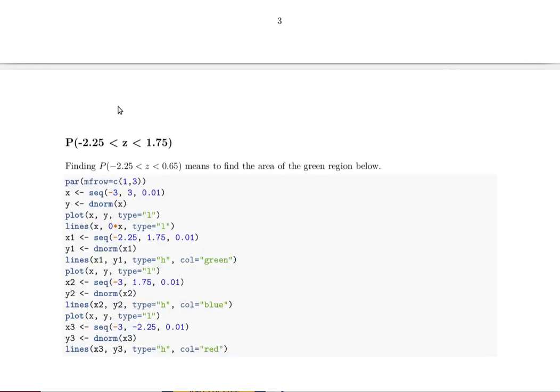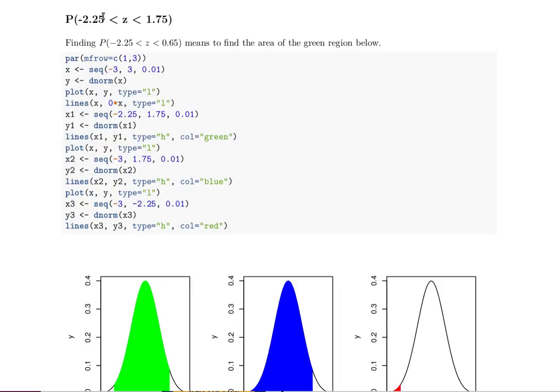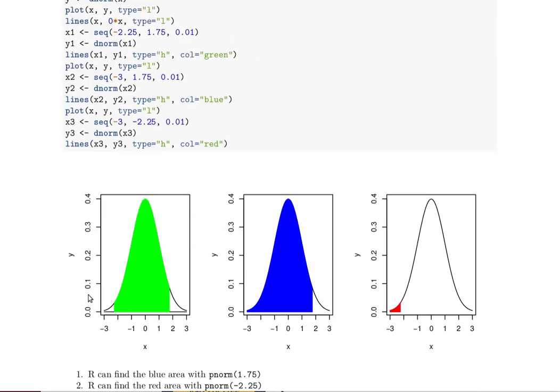Now notice the two values that we're interested in: from negative 2.25 up to 1.75. So there's negative 2.25 and there's the 1.75 right there. We want to find that green area.